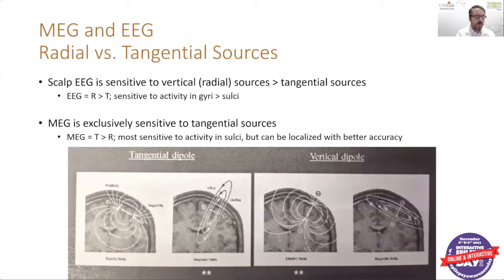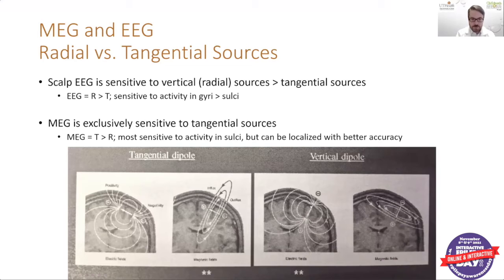Another comparison between MEG and EEG: scalp EEG is considered more sensitive to vertical or radial sources than tangential sources. A vertical dipole has the direction of electrical activity perpendicular to the scalp — an EEG electrode would pick up that electrical signal very well, whereas the SQUIDs detecting the magnetic field around the same radially-oriented source would not detect it quite as well. So vertical dipoles traveling in this direction are typically better seen by EEG.